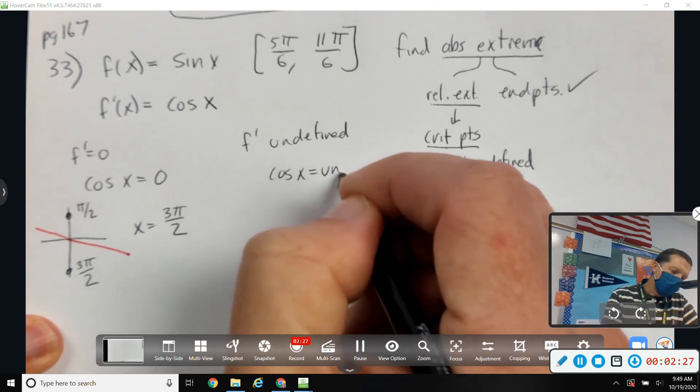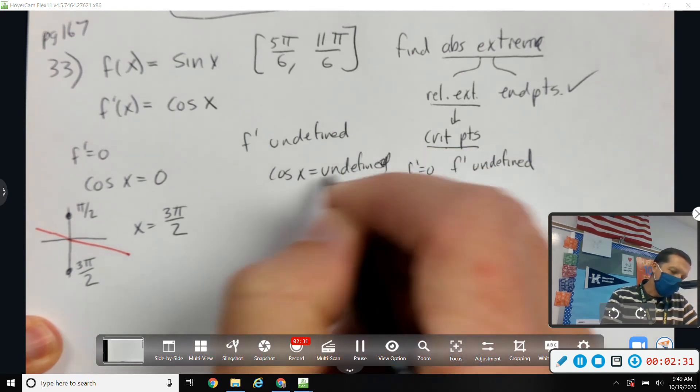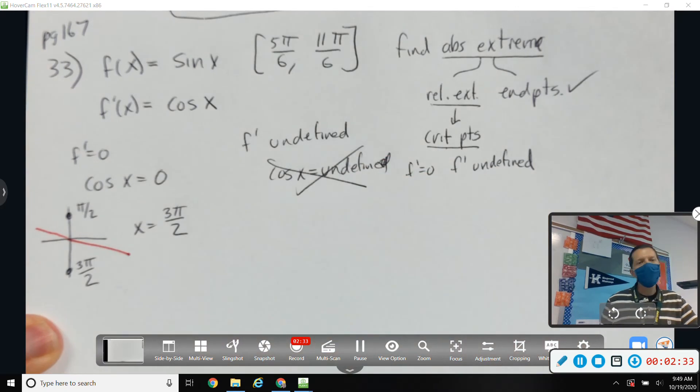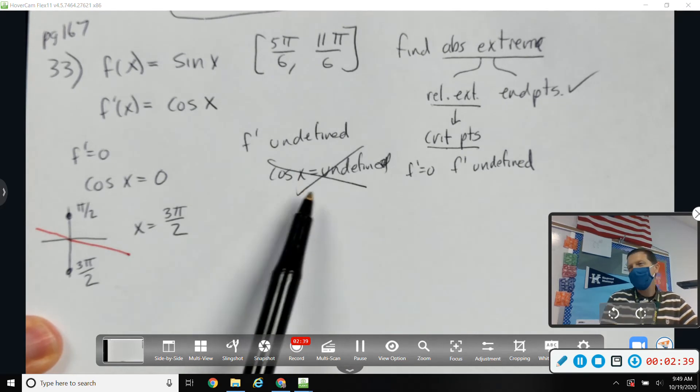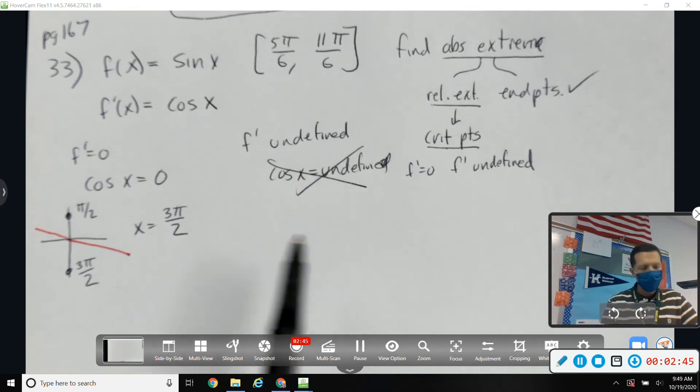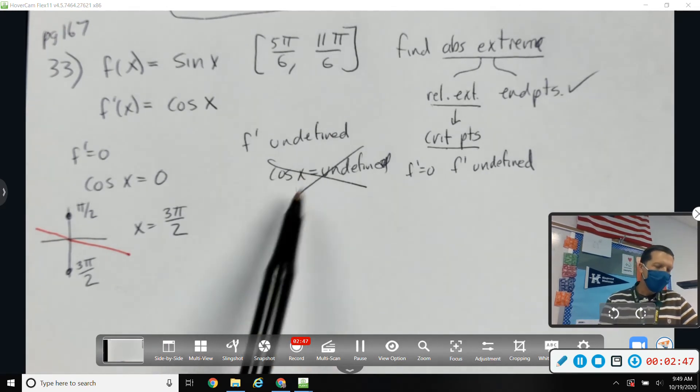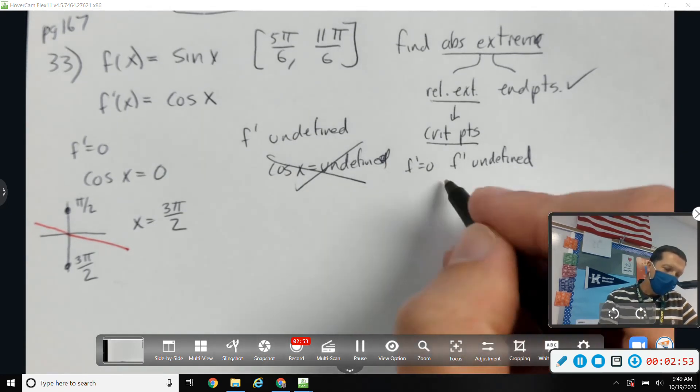So cosine of x equals undefined. That doesn't even happen anywhere, so we're not worried about that one. I think I mentioned this last week. This happens a lot where the undefined one doesn't really enter into the problem. The trouble is if you forget about it and it does enter into the problem, then you're going to miss something. So you always check it, but a lot of times that one just kind of goes away.